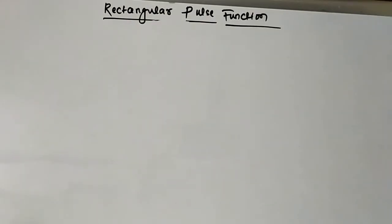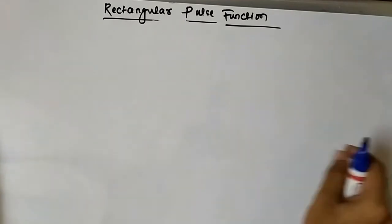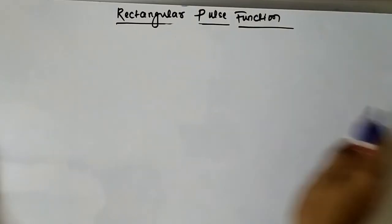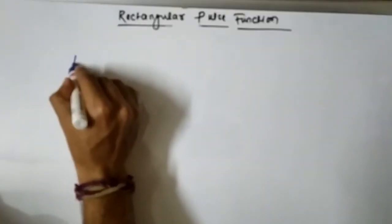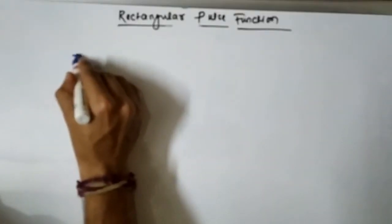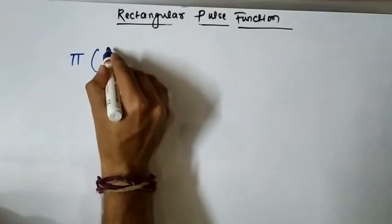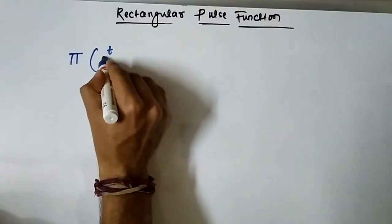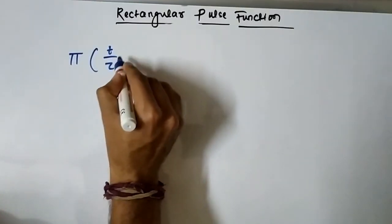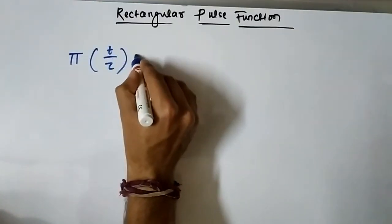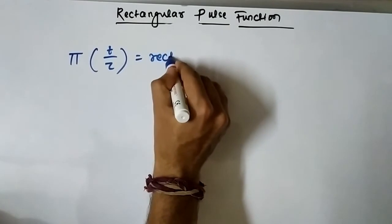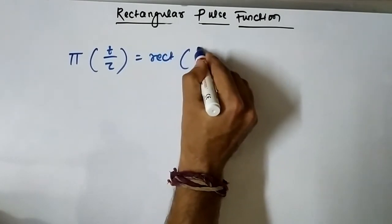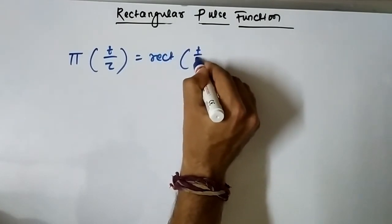So we discussed the rectangular pulse function represented as pi(t/tau) or rect(t/tau).